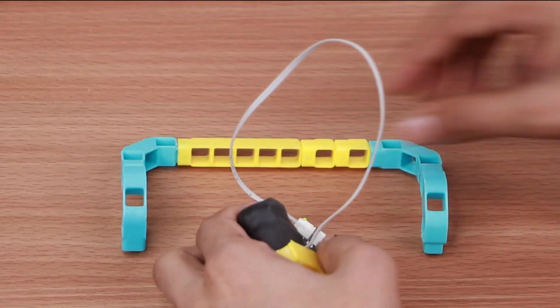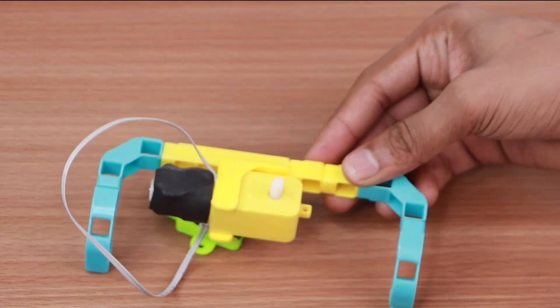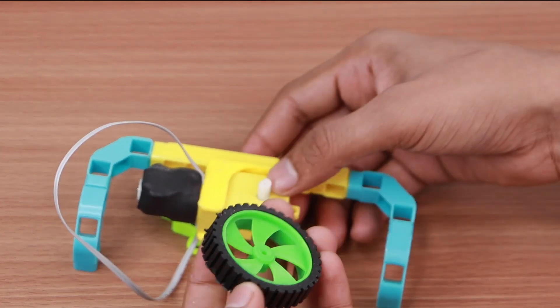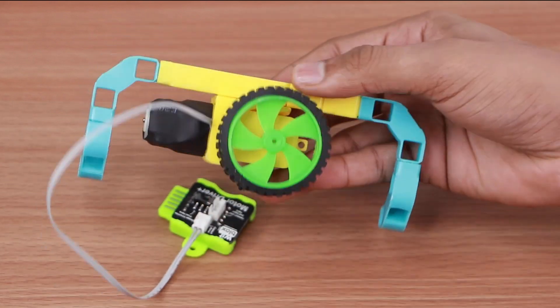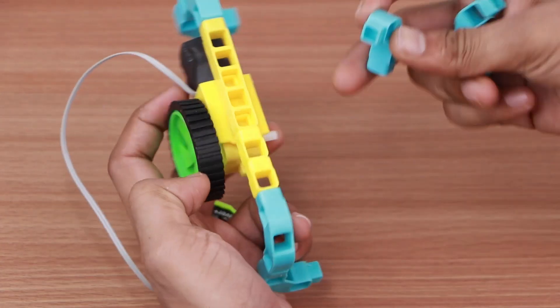Now take the BO motor with the motor holder and attach the holder to the base. Attach the wheel to the BO motor. Take two three-hole elbows and attach them to the base.